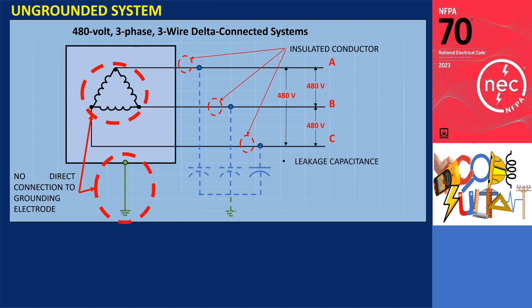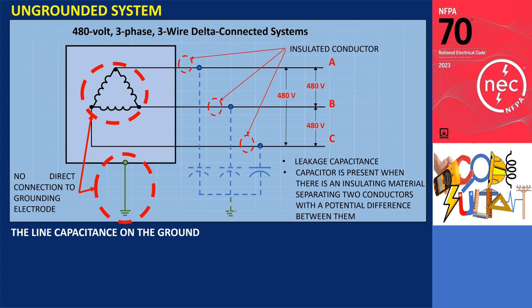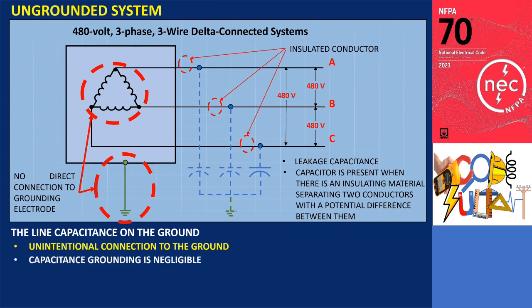In physical terms, a capacitor is present whenever there is an insulating material separating two conductors with a potential difference between them. Although this system is not directly linked to the earth, there is an unintentional connection to the ground due to capacitances existing between the live conductors and the ground. Hence, what is commonly referred to as an ungrounded system can be more accurately described as a capacitance-grounded system. Generally, the presence of capacitance grounding has minimal impact during normal operations. Under typical conditions, the line-to-ground capacitances do not significantly affect the system — the capacitive currents and phase-to-ground voltages are equal and phase-shifted by 120 degrees, resulting in a fully balanced system.